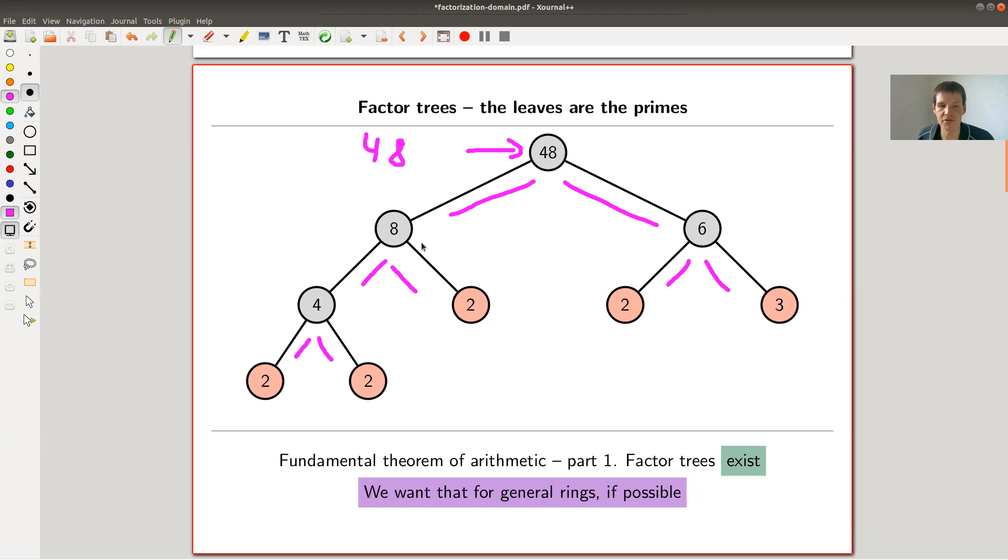And you keep on going. 8 is 4 times 2, 6 is 2 times 3, 4 is 2 times 2, and you keep on going until you hit a prime number. And what makes those numbers prime is that you just can't split them any further anymore because the only thing I can imagine for 2 would be 1 times 2. And that's kind of boring.